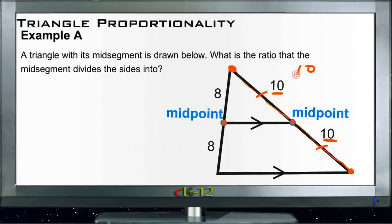So those two are the same, so that ratio would be 10 over 10 or 1 over 1. The other ratio is marked as 8 and 8 again, 8 over 8 is the same as 1 over 1. So the ratio of these segments that the midpoint creates is a 1 to 1 ratio.